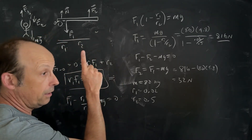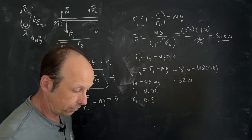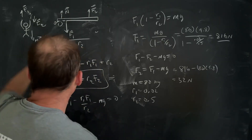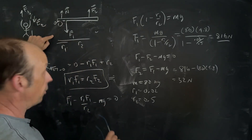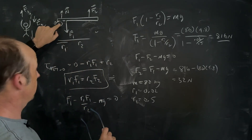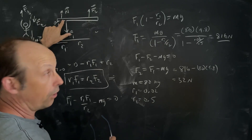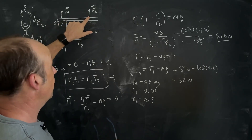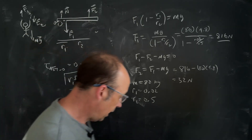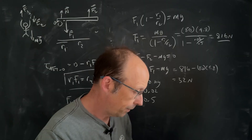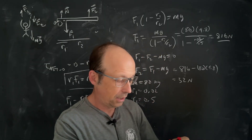Here are the three keys if you want to do this trick: Key number one — center of mass underneath the pivot point. Key number two — R1 as small as possible. Key number three — R2 as large as possible.